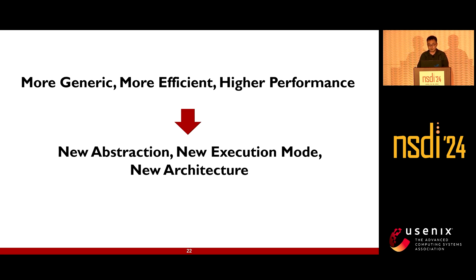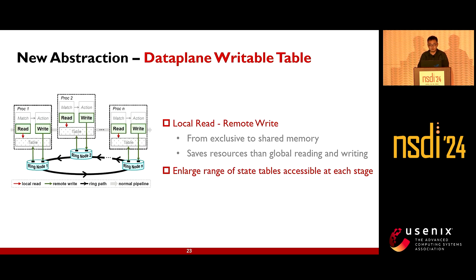With increasing processing requirements, there is a need for more generic, efficient, high-performance solutions for stateful network functions. Our paper proposes a new abstraction, new execution mode, and new architecture. We propose the abstraction of a data plane writable table. In pipeline-based design, memory is coupled with each stage processor, requiring the recirculate primitive. We argue that local reading and remote writing is sufficient for stateful functions, saving hardware resources compared to reading and writing state at any location. The local flow table can also serve as the global state table, enlarging the accessible range.